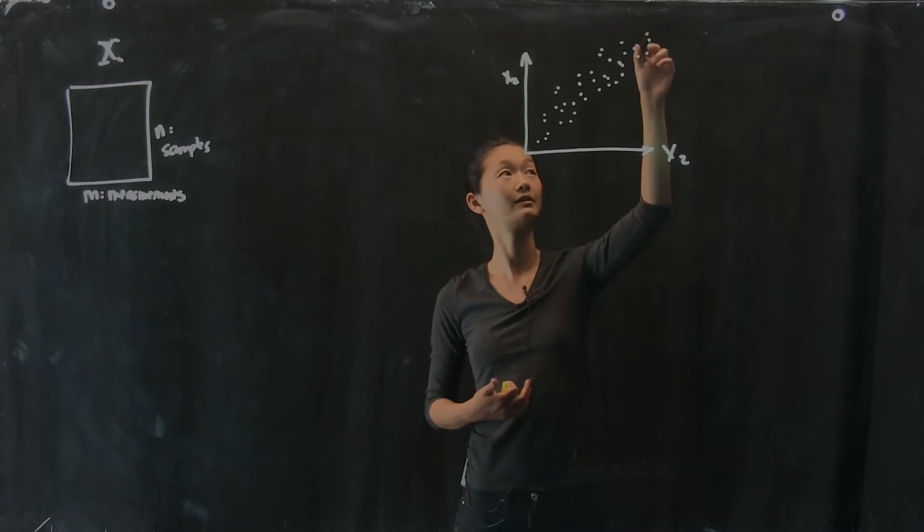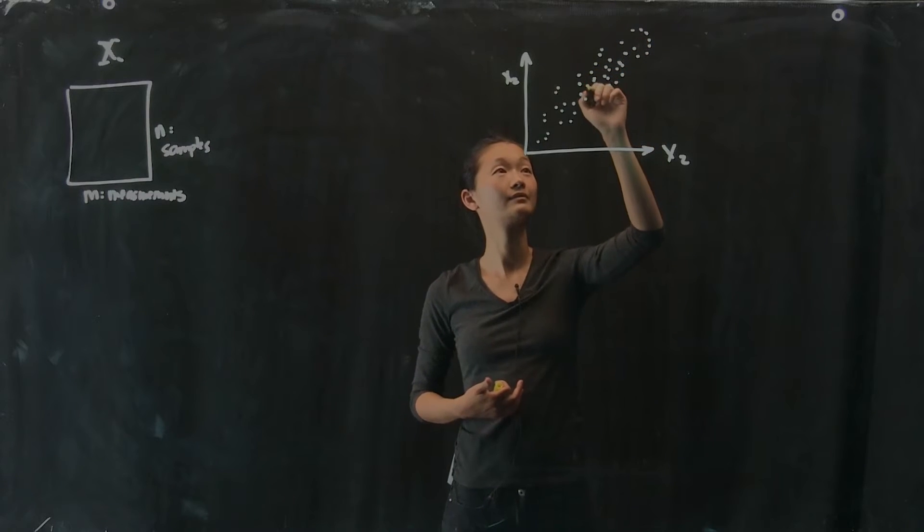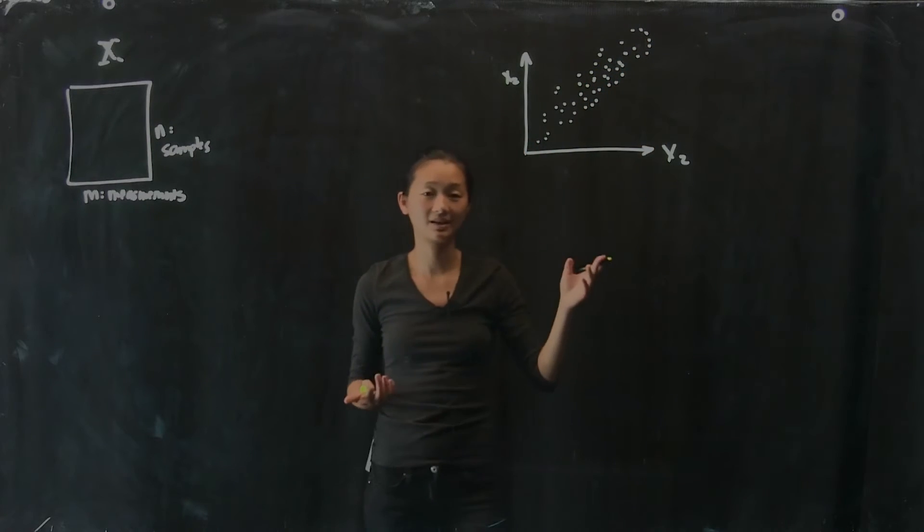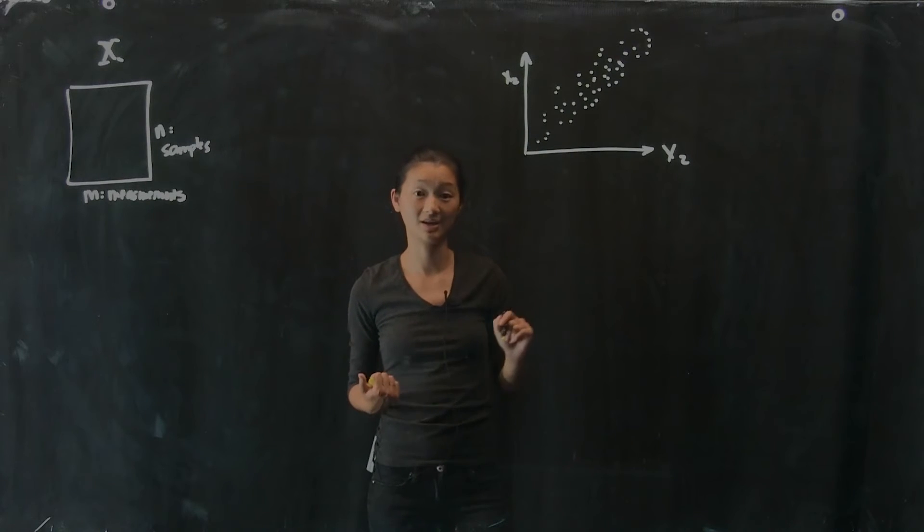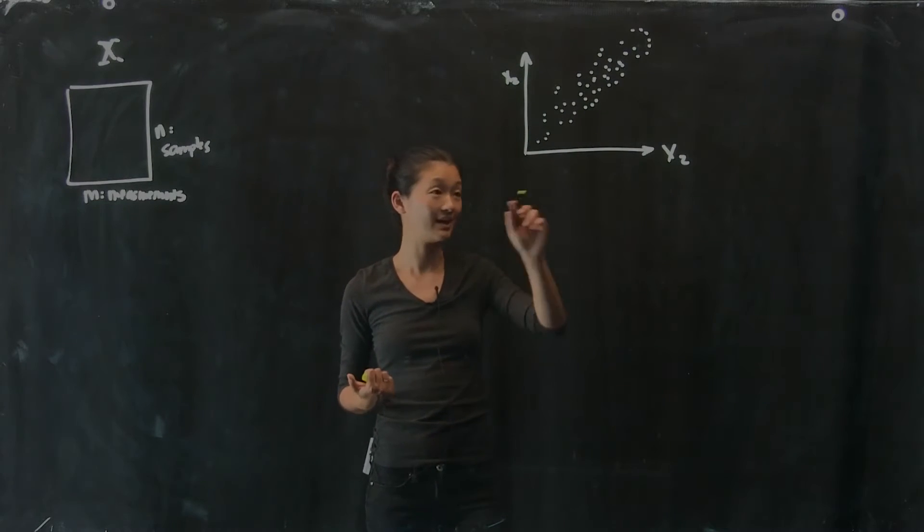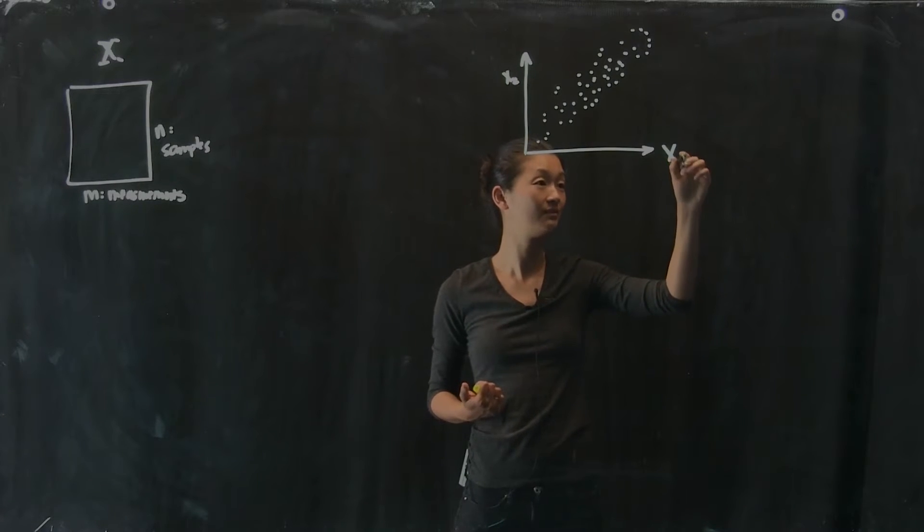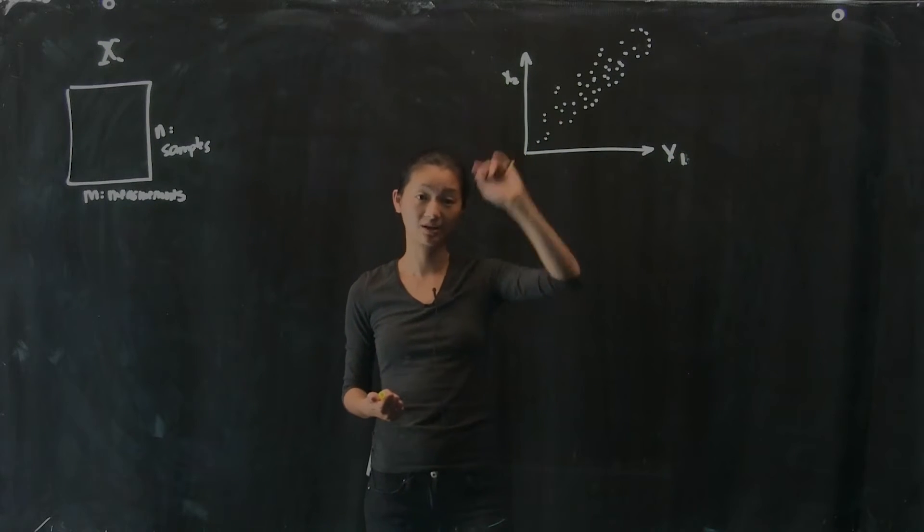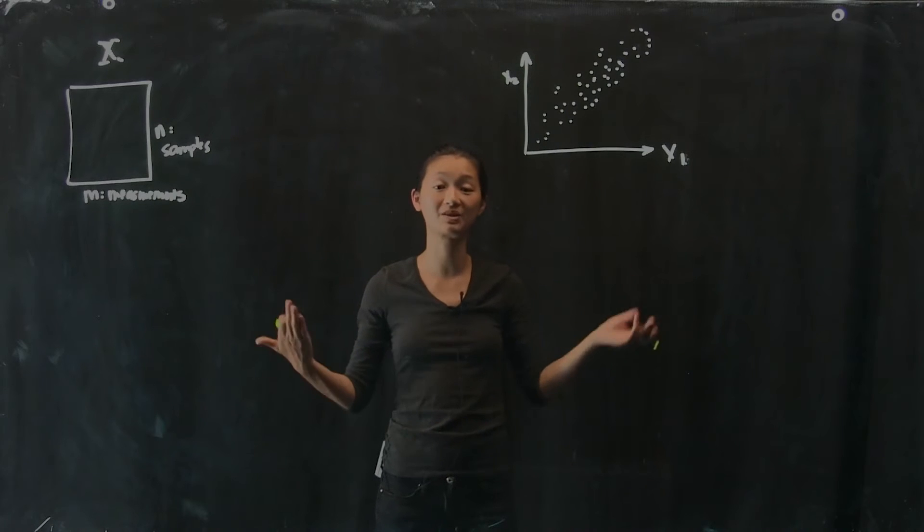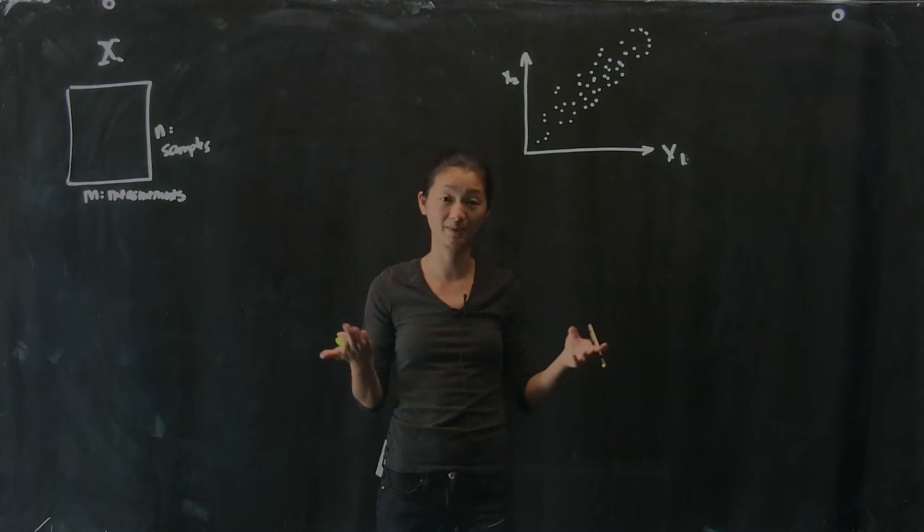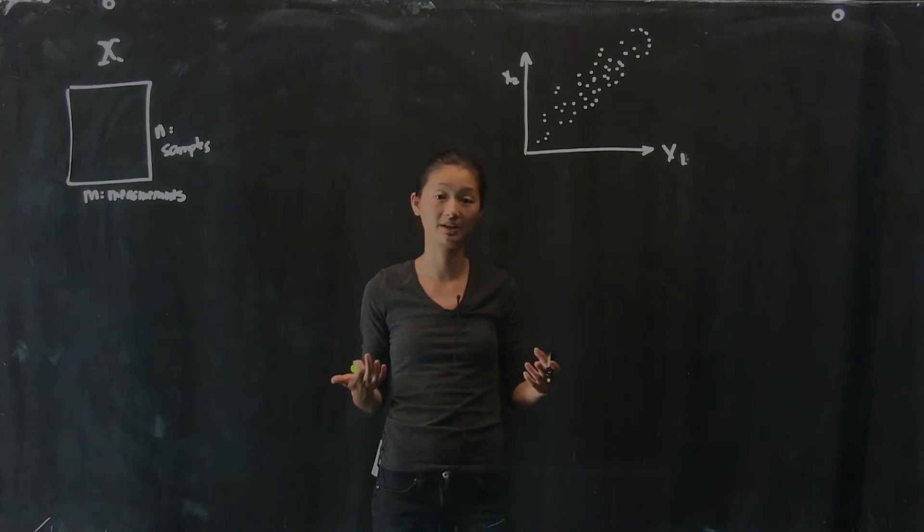This is my scatter plot of my data here. Now, you look at this data, and your first thought is, it's not random. Obviously, as x1 gets bigger, and this is x1 here, not x2. As x1 gets bigger, x2 gets bigger as well. I have some kind of two measurements that I have. They're not random with respect to each other. They're actually positively correlated.